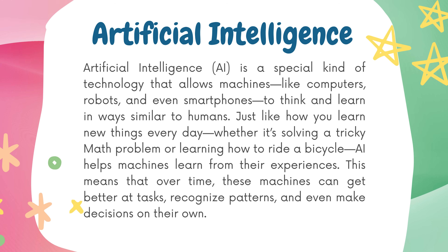Artificial Intelligence, AI, is a special kind of technology that allows machines — like computers, robots, and even smartphones — to think and learn in ways similar to humans. Just like how you learn new things every day, whether it's solving a tricky math problem or learning how to ride a bicycle, AI helps machines learn from their experiences. Over time, these machines can get better at tasks, recognize patterns, and even make decisions on their own.